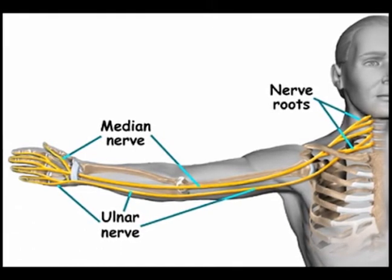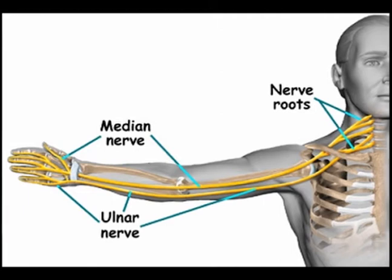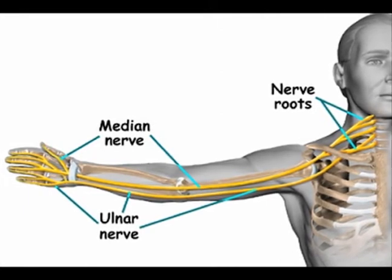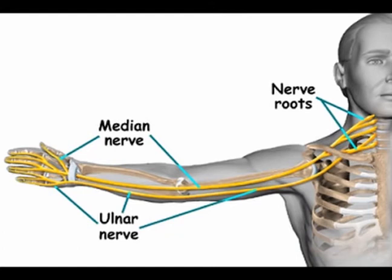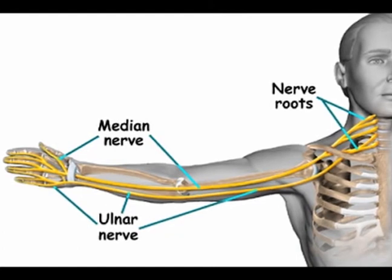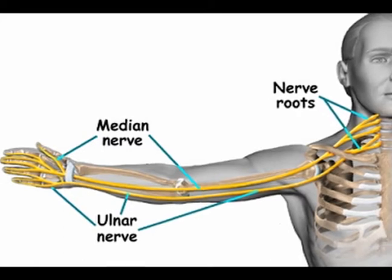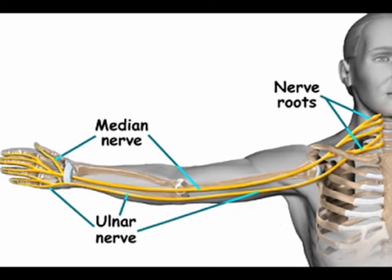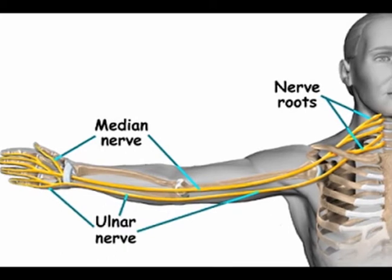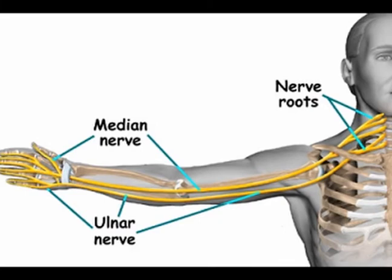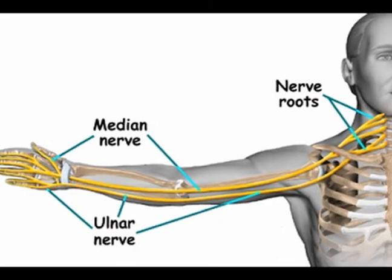Nerves are positioned in between muscles or run through muscles on their course from the spinal cord to their destination in the extremities. There is a normal sliding motion between the nerves and the muscles or other surrounding tissues that exists when there is no nerve impingement present. When nerve impingement occurs, this sliding motion ceases.